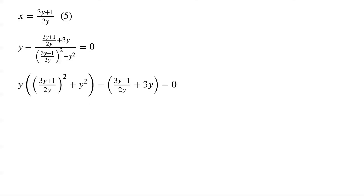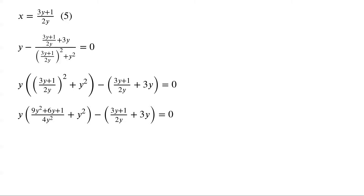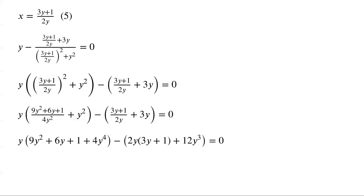(3y plus 1)/(2y) squared equals (9y squared plus 6y plus 1)/(4y squared). Multiplying the equation by 4y squared, we have: y·(9y squared plus 6y plus 1) plus 4y to the power 4 minus 2y·(3y plus 1) plus 12y cubed equals 0. Dividing by y and rearranging: 4y to the power 4 plus 9y squared plus 6y plus 1 minus 6y minus 2 minus 12y squared equals 0.